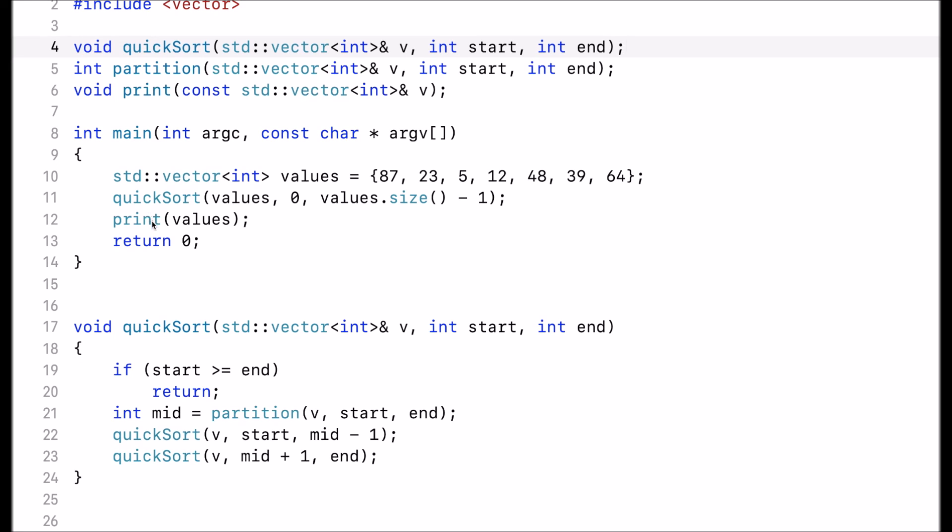And then I call the print function to print out the values. Note that when I make the function call, I pass in a reference. So this directly sorts the values in this vector. Let's run this.